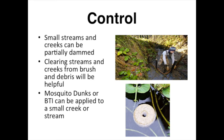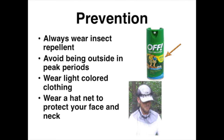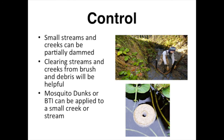Control. To date, there is little to control the population of blackflies. However, here are some techniques that can be used to help with population control. Small streams and creeks can be partially dammed — stopping the flow of water would lower the fly population, since larvae need moving water to survive. Clearing streams and creeks from brush debris will also help decrease the blackfly population, as larvae not only need flowing water but also need something to attach themselves to while developing. Mosquito dunks, or BTI, can be applied to a small creek or stream, though this is not always very effective since the dunk has to be timed properly, and dunks need to be dispersed throughout the water every 50 to 100 feet, making it inconvenient and pricey.